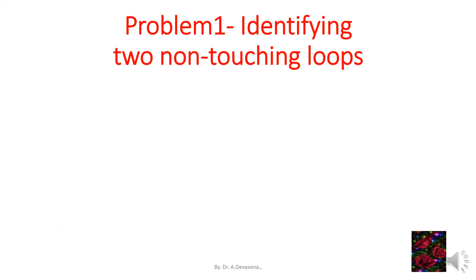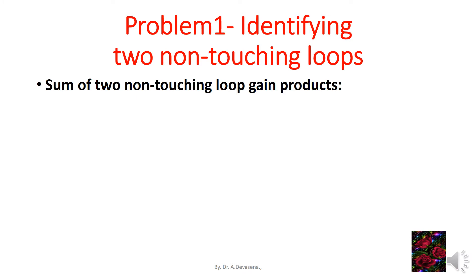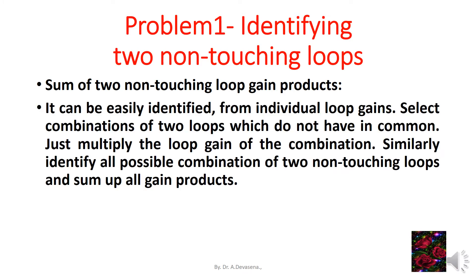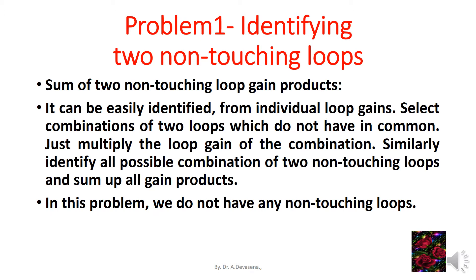Identifying two non-touching loops: sum of two non-touching loop gain products. Select combinations of two loops which do not have nodes in common, then multiply the gains of each combination. In this problem we do not have any non-touching loops, so the sum of P_m2 is equal to 0. Similarly, we do not have three non-touching loops, so the value of sum of P_m3 is also 0.